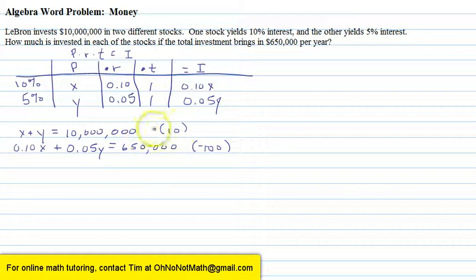For the first equation, I have 10 times X, which is 10X, plus 10 times Y, which is 10Y, equals 10 million times 10 is 100 million.